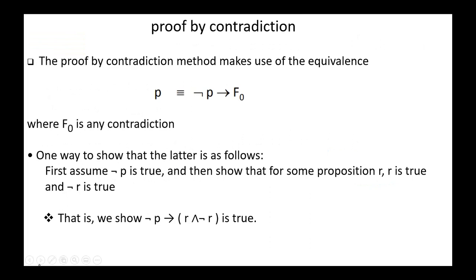Next, proof by contradiction. The proof by contradiction method makes use of the equivalence: P is equivalent to not P implies F0, where F0 is any contradiction. One way to show the latter is: first assume not P is true, and then show that for some proposition R, both R is true and not R is true — that is, not P implies R conjunction not R is true.